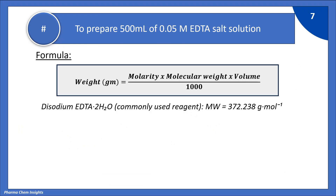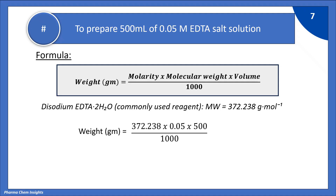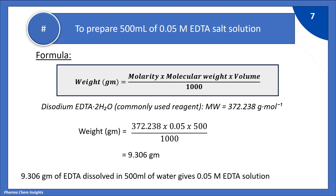Now let's see how to prepare 500 ml of 0.05 molar EDTA solution. The formula is: weight in grams equals molarity multiplied by molecular weight multiplied by volume, divided by 1000. The molecular weight of EDTA is 372.238 grams. The volume to prepare is 500 ml and molarity is 0.05 molar. Substituting these values gives: weight = 372.238 × 0.05 × 500 / 1000 = 9.306 grams. Thus, 9.306 grams of EDTA dissolved in 500 ml of water gives a 0.05 molar EDTA solution.